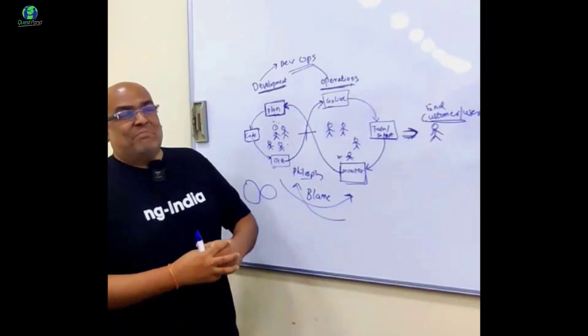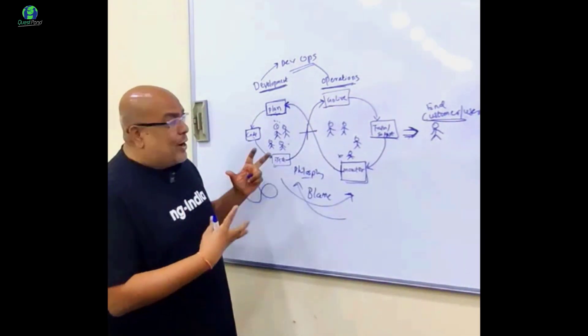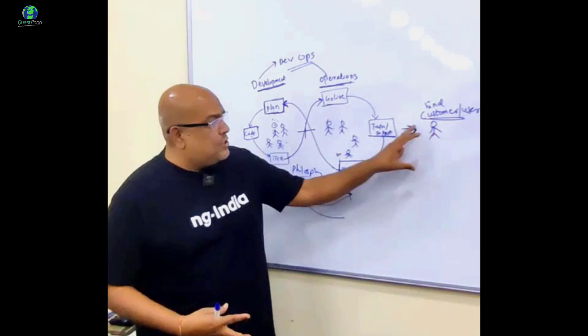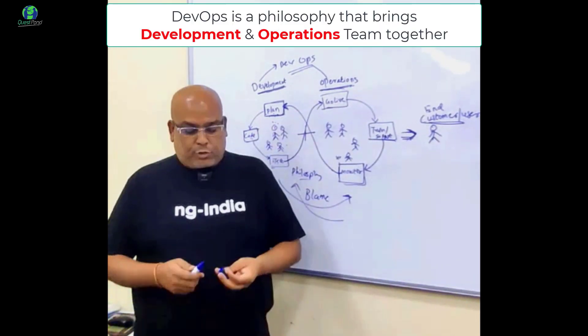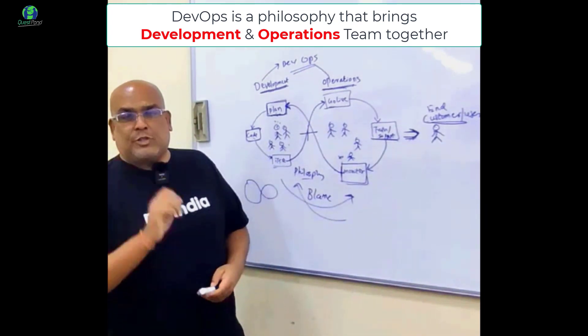They should try to become one team. The end customer should not see both of them as two different teams. So that would make a project successful, that would make a software successful. So that is what DevOps is.